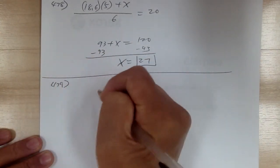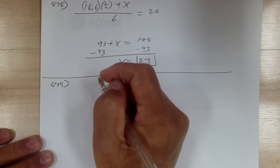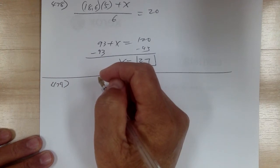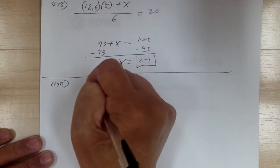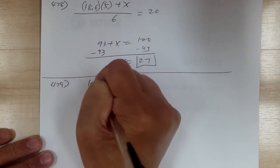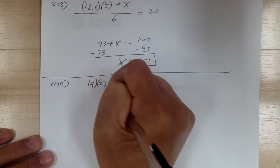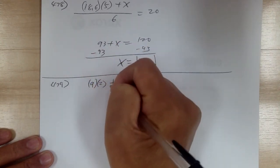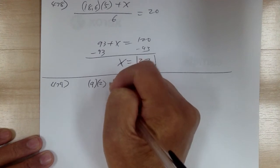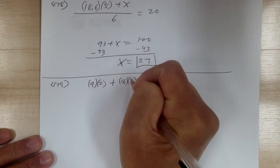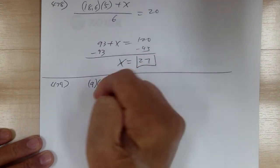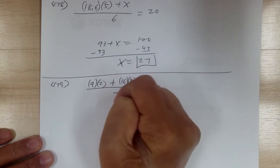Next one, 479. What's the average of 7 numbers if the average of the first 2 is 9? So average of the first 2 is 9, so 9 times 2 gives you the total. And the average of the last 5 is 16, so 16 times 5, and divide by a total of 7.